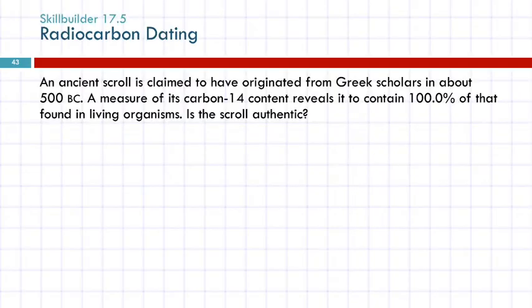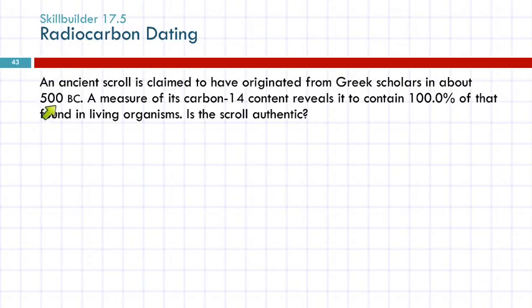Let's look at a problem. An ancient scroll is claimed to have originated from Greek scholars in about 500 B.C. A measure of its carbon-14 content reveals it contains 100% of that found in living organisms. Is the scroll authentic? We don't have to do any calculations — the answer is just no. Scrolls are made of plant tissue; if written in 500 B.C., that would make it around 2,500 years old. The carbon-14 content would have to be much less than 100%.